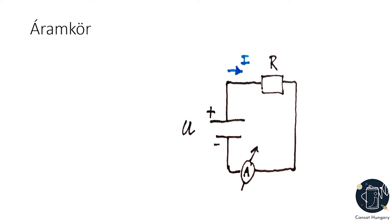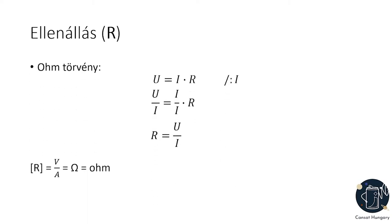Az áramot és a feszültséget már definiáltuk, de mi ez az ellenállás? Mi az áram és a feszültség közötti viszony? Ohm törvénye kimondja, hogy egy vezető anyag egy árammal átjárt szakaszán a villamos feszültség arányos az átfolyó árammal, és az arányossági tényező az ellenállás, amit R-rel jelölünk. A mértékegysége volt per amper, amit nagy Ω görögbetűvel jelölünk és ohmnak mondjuk. Az összefüggés átrendezve: R = U / I, tehát a feszültség és az áram hányadosa az ellenállás.